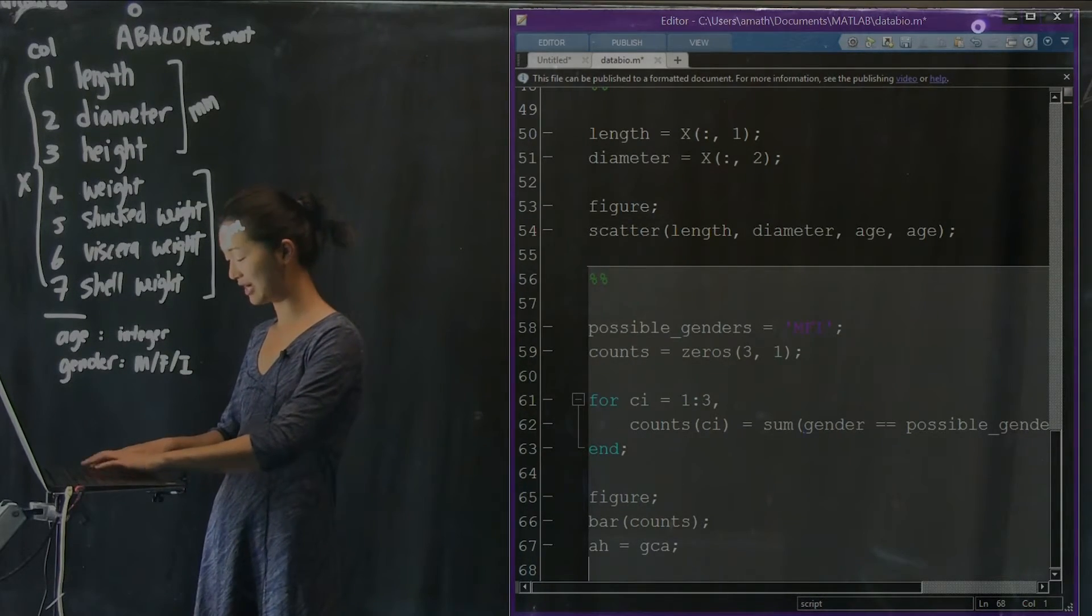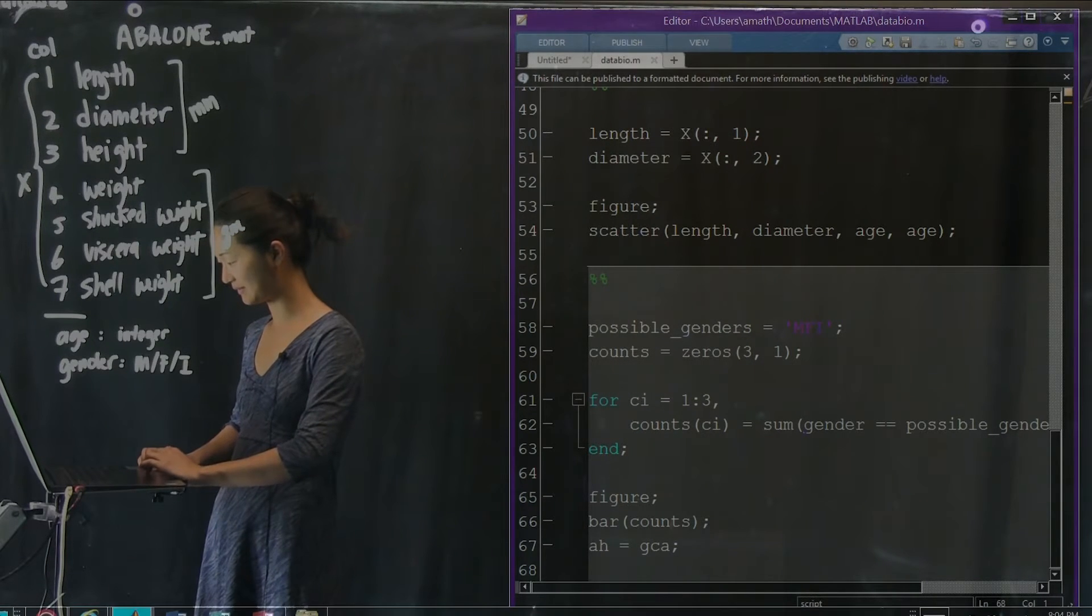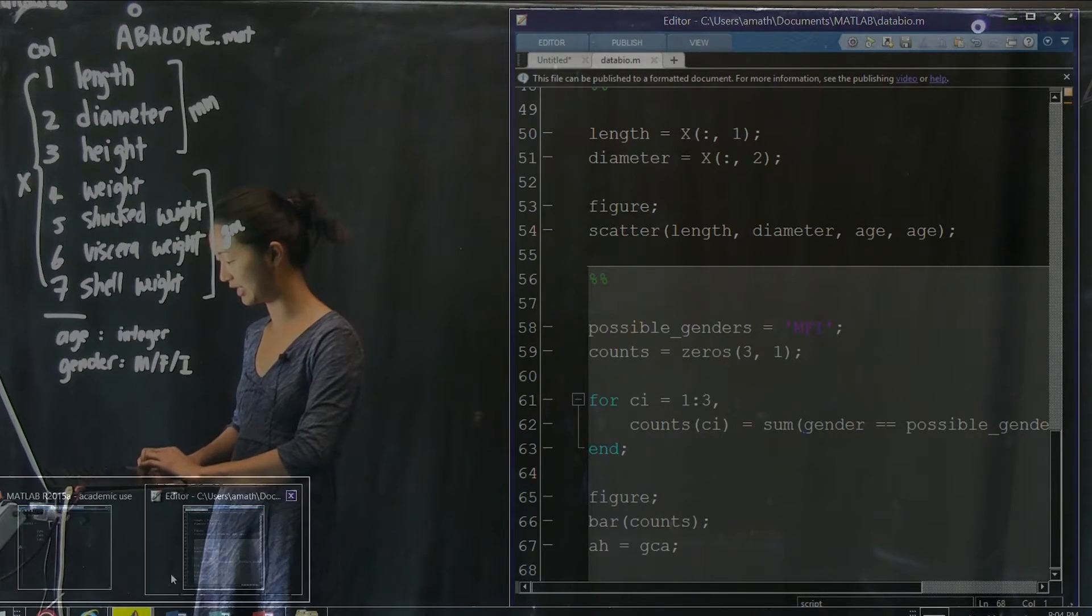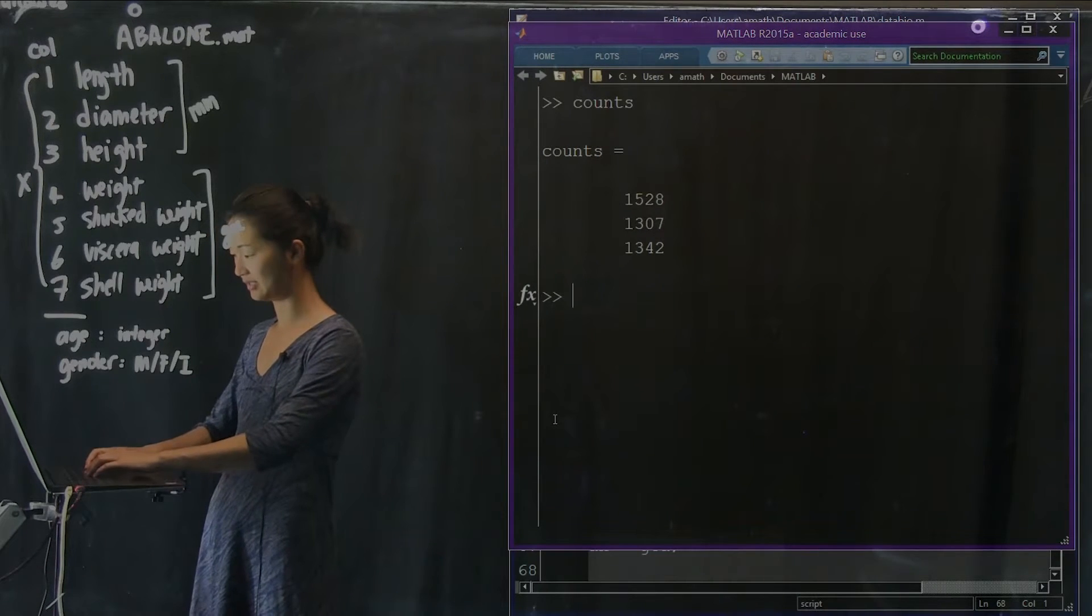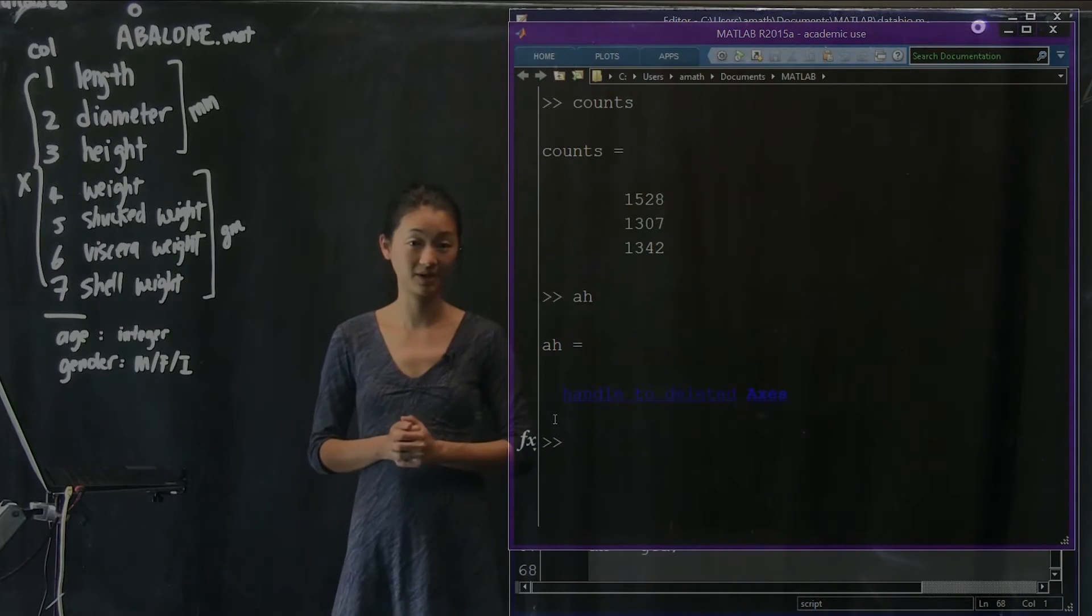And what you can do is, after I run this code, AH equals whatever the current handle axis is. So, there's a handle to the lead axis.